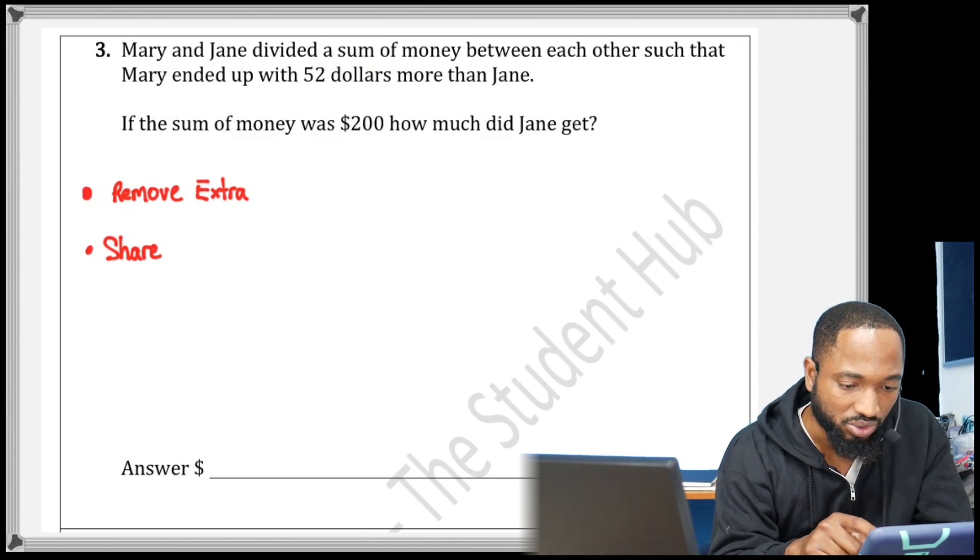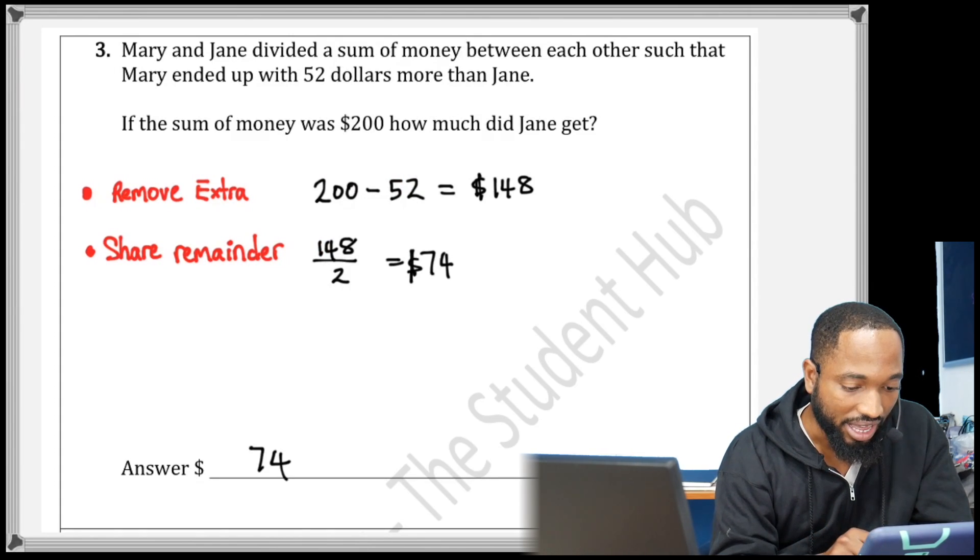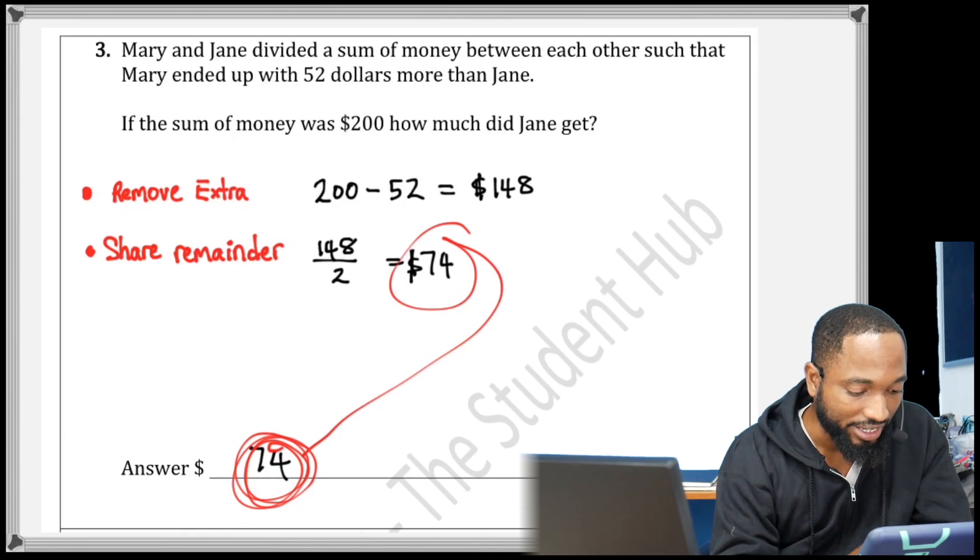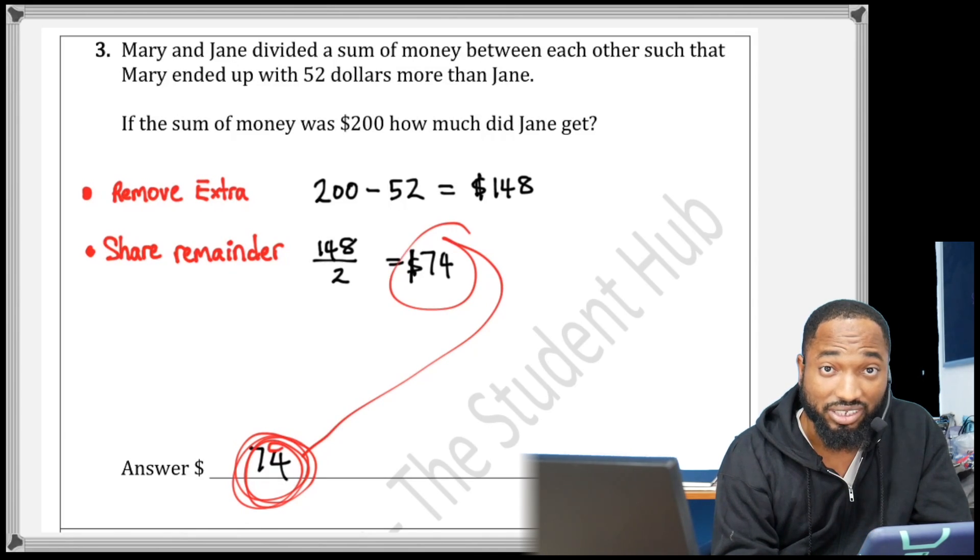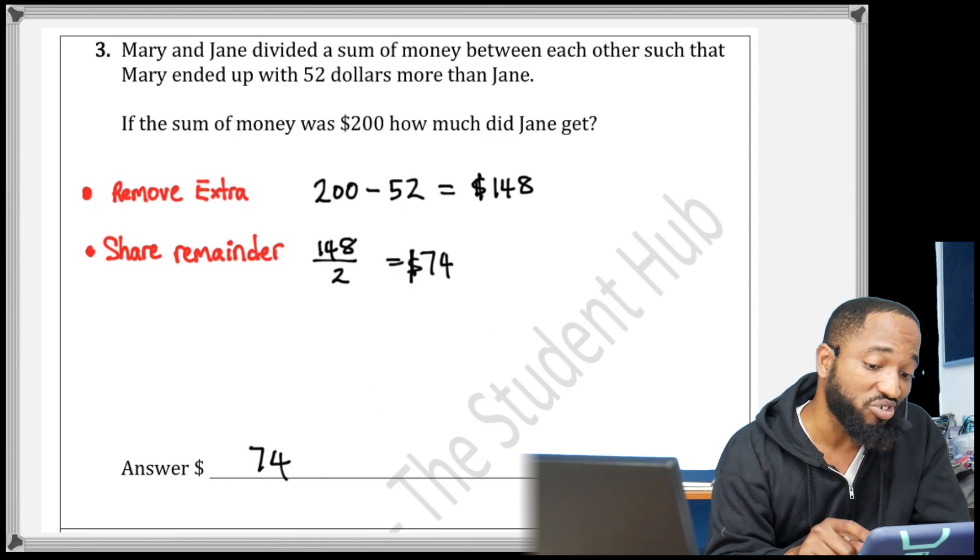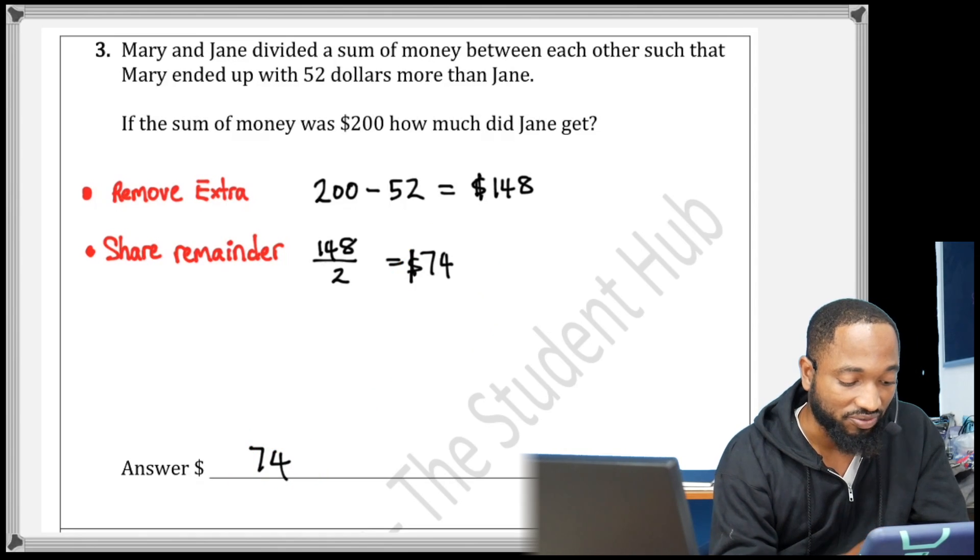So you can just see: remove extra, share remainder. Remove the extra, share remainder. And this time I didn't add on the extra. Why didn't I add on the extra? Think about that. Why didn't I add on the extra to get my answer?